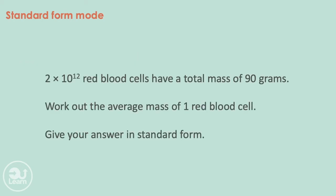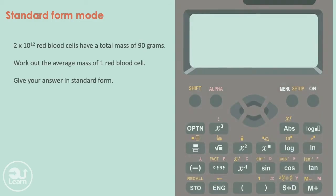Another interesting question: 2 times 10 to the power of 12 red blood cells have a total mass of 90 grams. Work out the average mass of one blood cell. Give your answer in standard form. We know 2 times 10 to the power of 12 red blood cells is equivalent to 90 grams, so let's put this as a ratio.